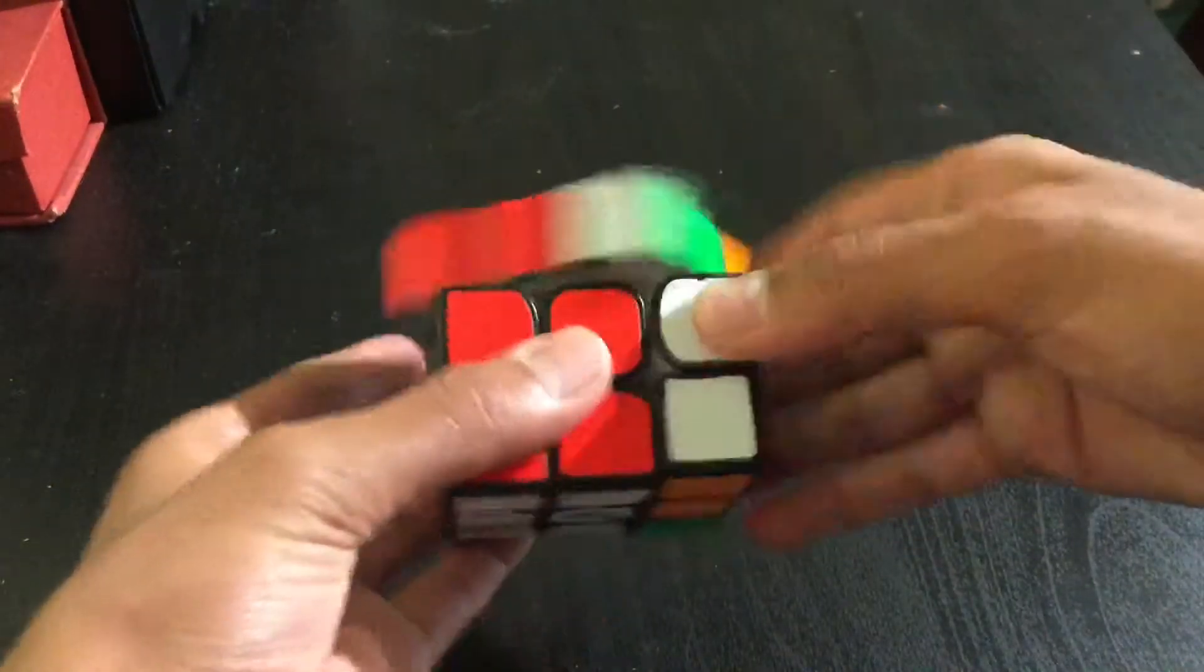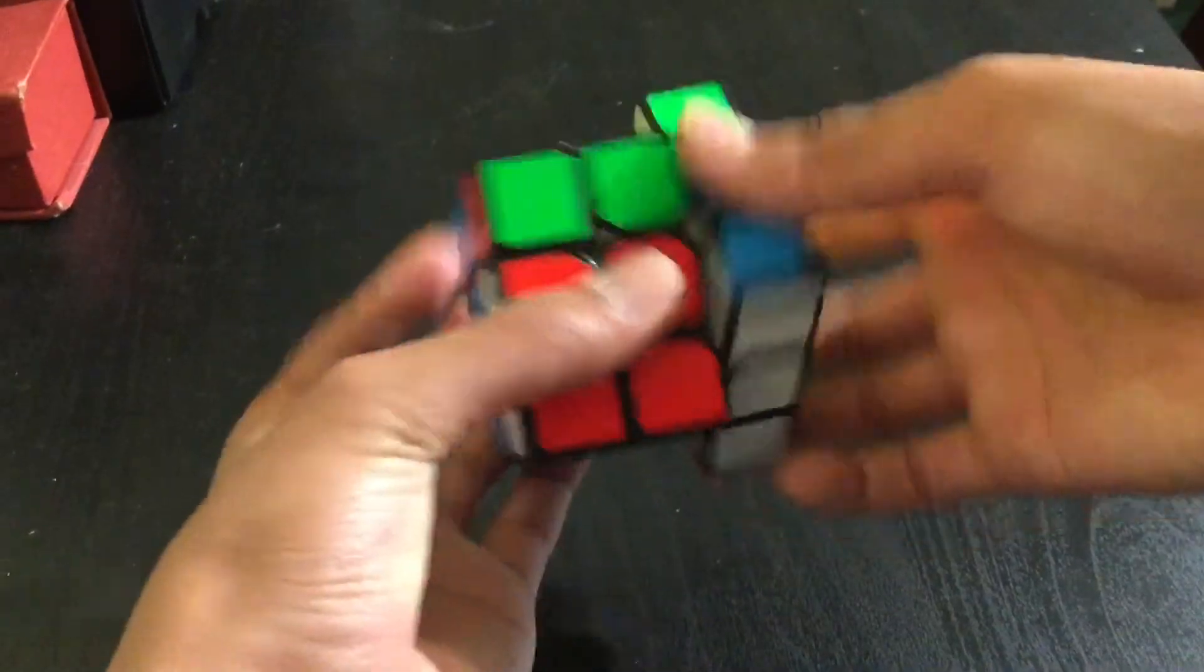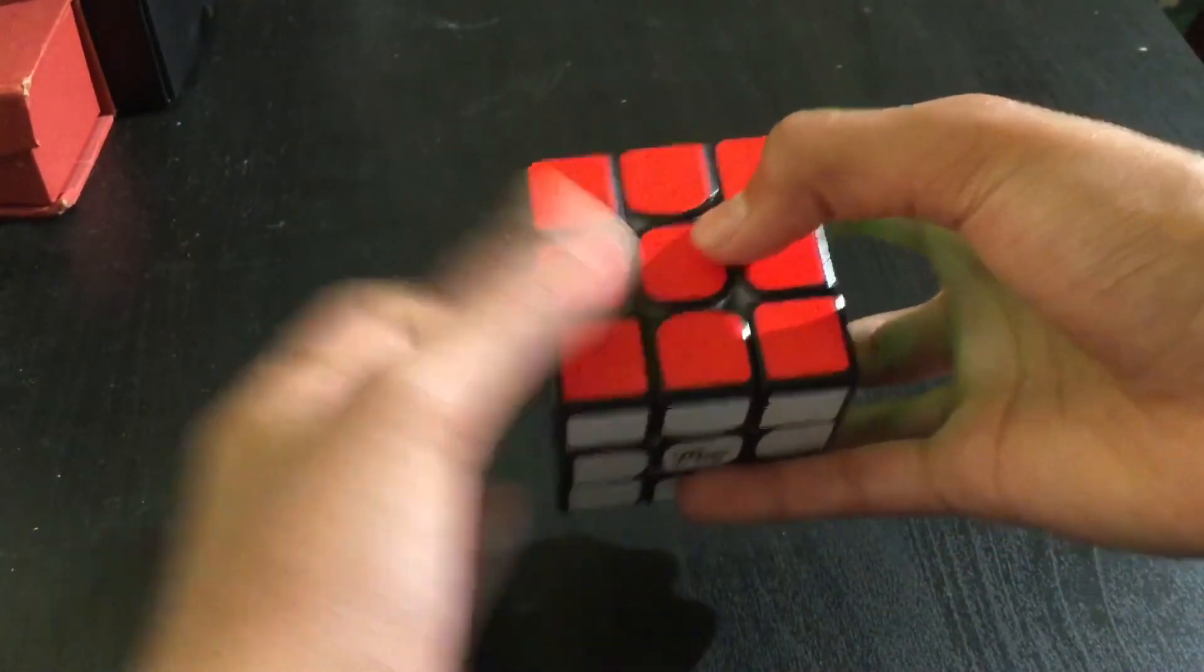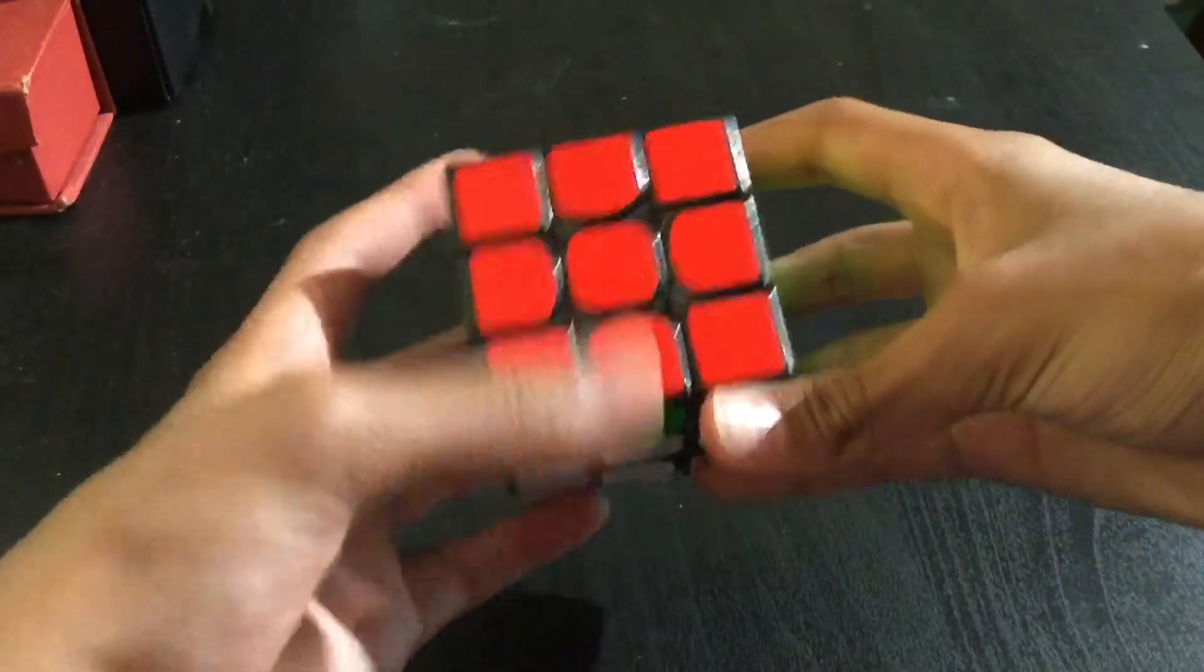So instead of doing an index finger F prime for the last move, you can use a thumb F prime.